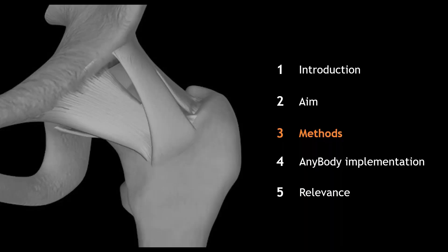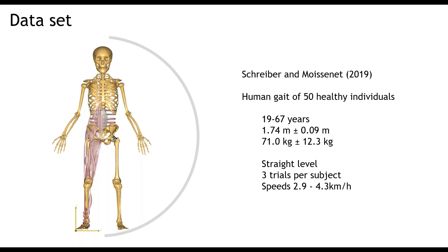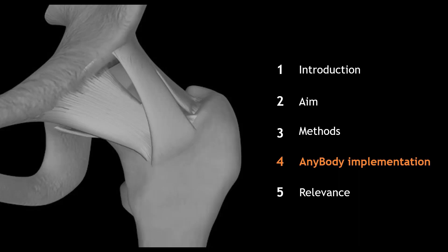So, how did we investigate this? We simulated the human gait with and without the inclusion of the IFL. We then studied the effect of including the IFL on the required muscle work of the hip musculature. To do so, we used the dataset of Schreiber and Weissene of 2019. This dataset comprises the human gait of 50 healthy individuals with ages between 19 and 67 years. The dataset also included other physical parameters such as length and mass. We selected three straight-level walking trials for each subject. In these trials, the subjects walked at speeds between 2.9 and 4.3 km per hour.